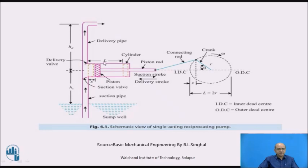In IC engines, air-cooled engines are provided with fins on the periphery of the cylinder, whereas in the water-cooled engine, there is a cooling water jacket provided on the cylinder. That is not required in the case of the reciprocating pump, whether it is a single-acting or double-acting reciprocating pump.